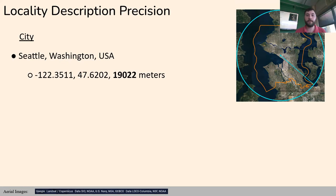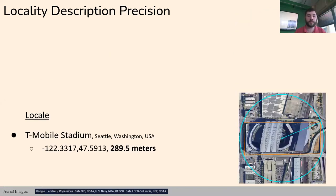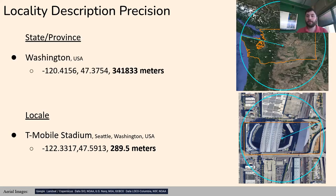At the city level it gets a bit better — now we're at 19 kilometers, but there's still quite a few environments here: lots of water, lots of forests, urban landscapes. Still not very useful for computational analysis. Then we have the locale level — the stadium the baseball was hit within. Now the uncertainty is down to basically 300 meters, and the number of environments it could have existed within are reduced to two or maybe three. Between the coarsest and finest description, the coordinates moved 150 kilometers west, we reduced the number of possible environments by several factors, and the uncertainty is much more precise.